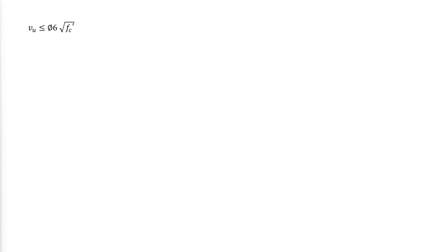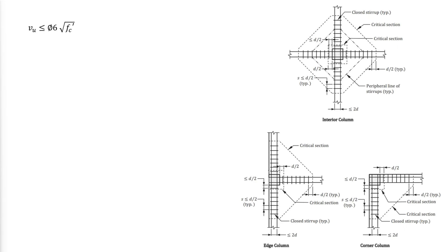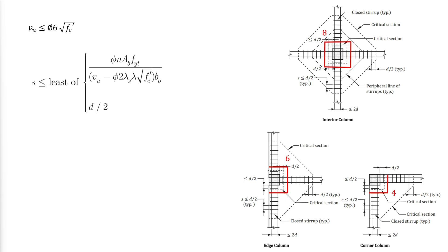Prior to determining the required size and spacing of stirrups for shear reinforcement, a specific condition should be verified. If it is not satisfied, the thickness of the slab should be increased. The total number of stirrup legs provided in one peripheral line depends on the number of sides of the critical section. The required spacing can be determined using the corresponding equation. Stirrups can be terminated wherever the design strength of concrete alone can handle the factored loads — this happens whenever a specified termination condition is met.